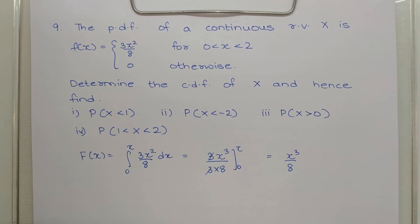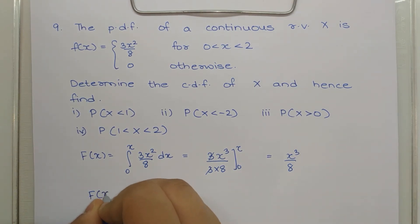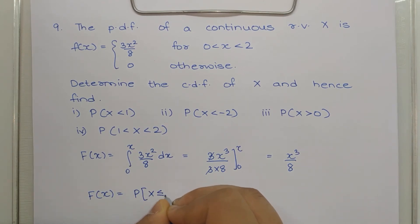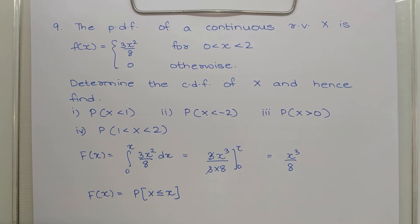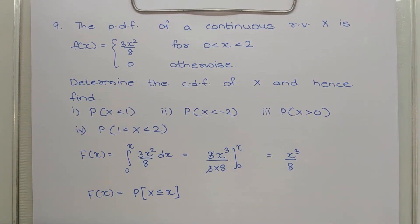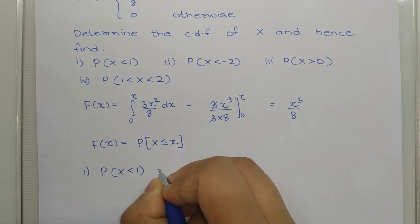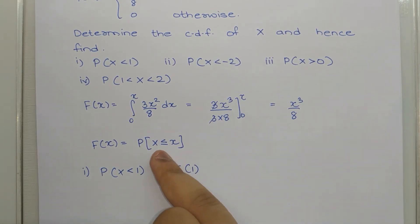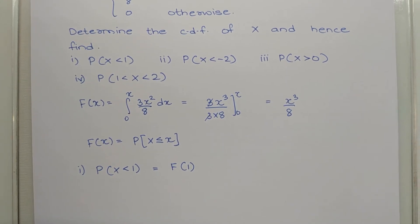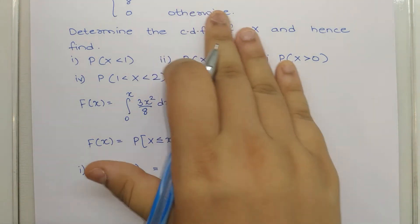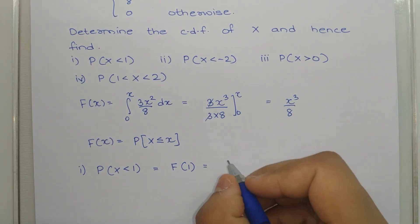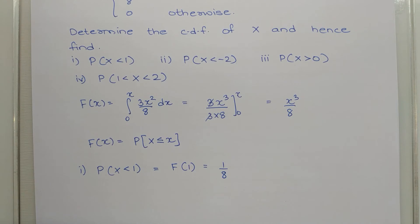The key concept of CDF: F(x) = P(X ≤ x). So instead of integrating repeatedly, we substitute directly. For P(X < 1): this equals F(1) = 1³/8 = 1/8. For P(X < -2): since -2 < 0, it falls below the lower limit, so F(-2) = 0.